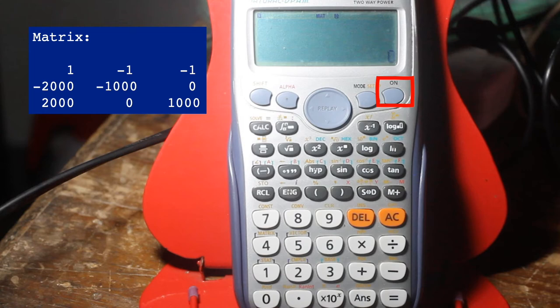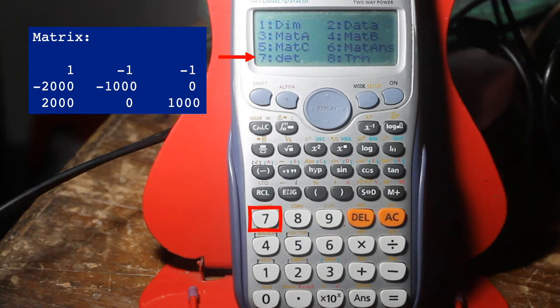So step 2, let the calculator compute for the determinant. So click Shift and then choose matrix by clicking 4. Select determinant by clicking 7.